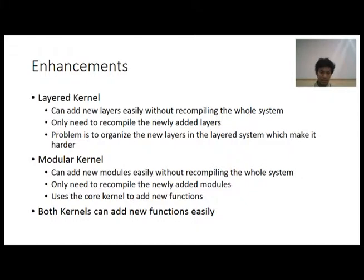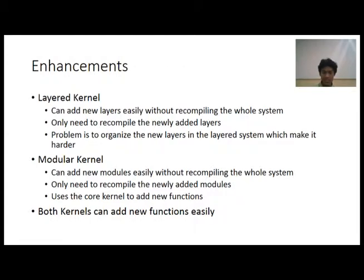For enhancements: in layered kernel, you can add new layers easily without recompiling the whole system — only the newly added layers need recompiling. However, organizing those new layers in the layered system makes it harder and more complex depending on the design. In modular kernel, you can also add new modules without recompiling the whole system, and the core kernel handles the organization, making it easier and more portable. In conclusion, both kernels can add new functions easily, but the implementation details make it harder.